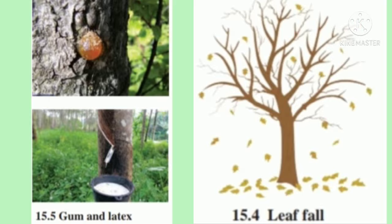Now let us see about excretion in plants. Removal of waste or harmful substances from the body is called excretion. In unicellular organisms, waste materials are directly eliminated across the cell surface, whereas the process of excretion in multicellular organisms is complex. Excretion is a simpler process in plants than in animals. There is no special organ or system for excretion in plants.